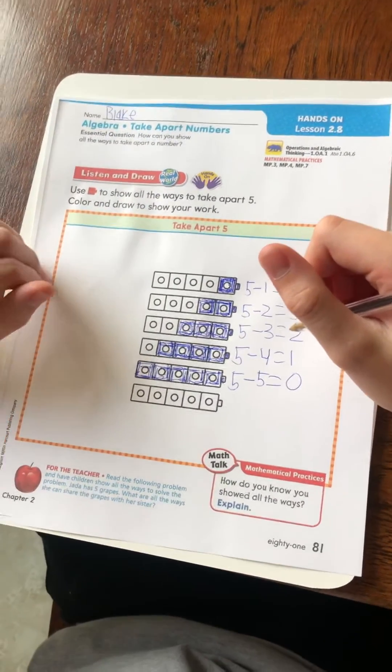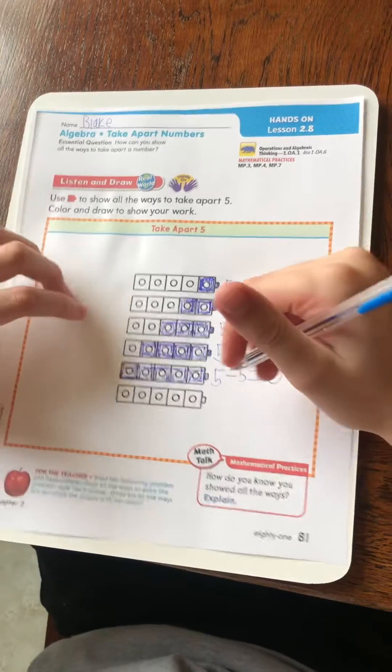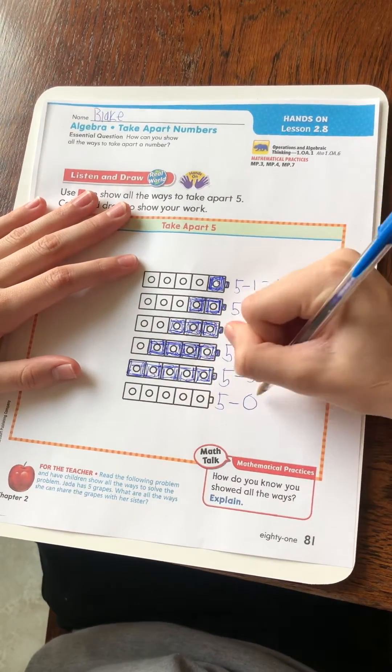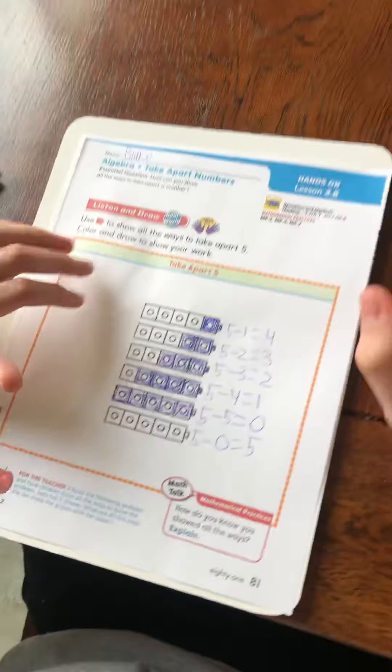And on the last one, if you didn't color any of them, it would be five minus zero equals five. Wow.